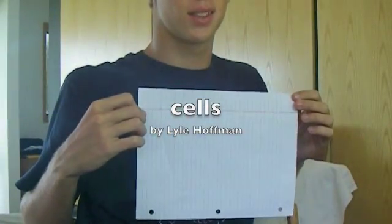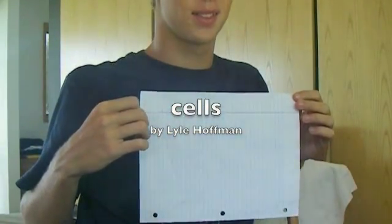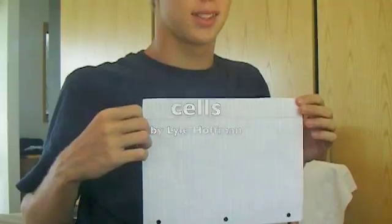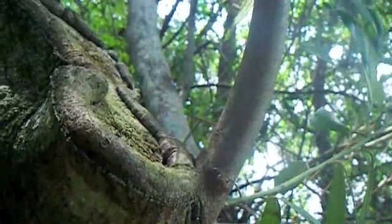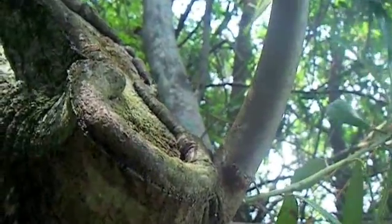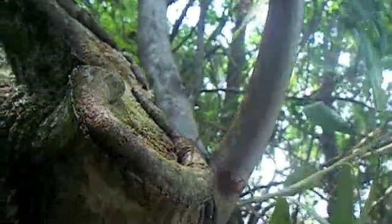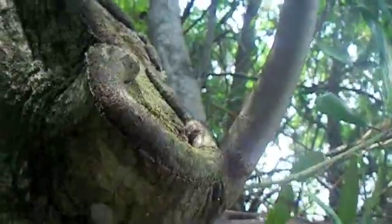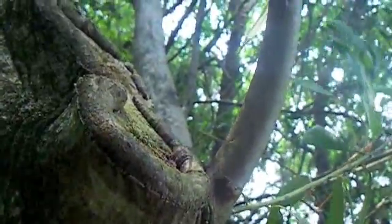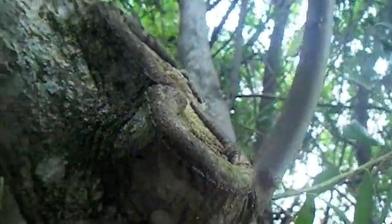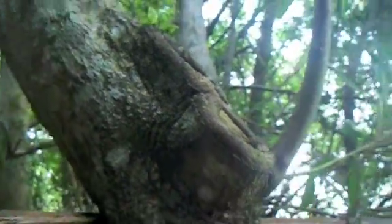Cells, by Lyle Hoffman. The first cells we're going to talk about are collenchyma cells. They are elongated, they have no chloroplasts, and thickened primary walls. They're on the corner of angular stems.